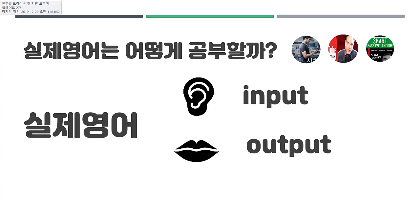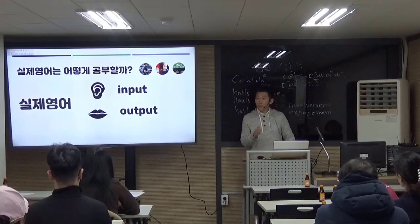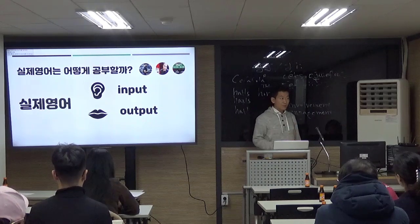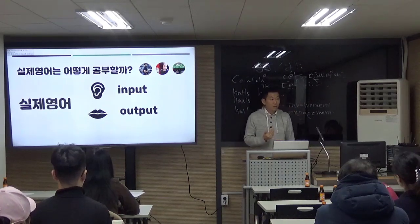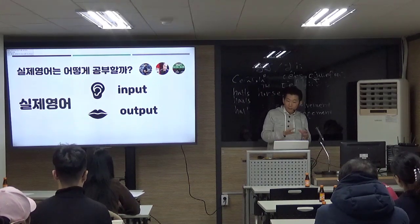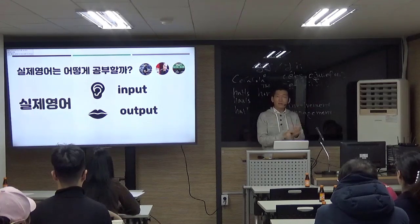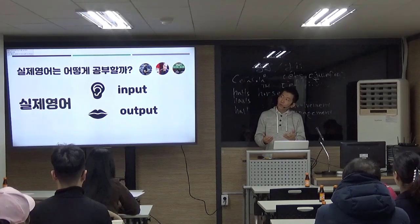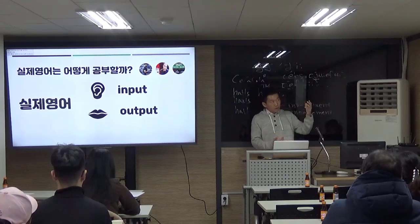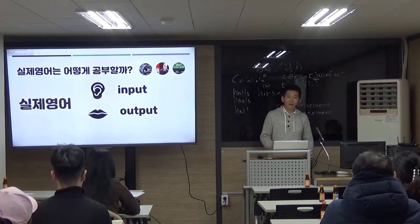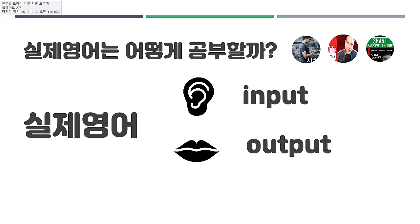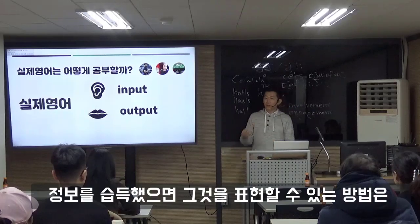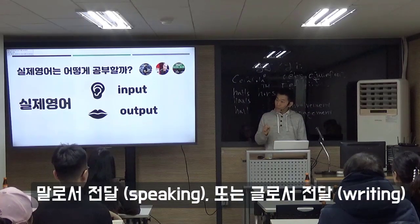인풋하면 어떤 것이 생각나요? 우리가 정보를 습득하는 방법 두 가지가 있죠. 일단 읽는 거죠. 글을 읽음으로써 정보를 습득합니다. 그 다음 두 번째는 듣는 거잖아요. 보고 듣고 하는 거죠. 정보가 쌓이면 그것을 전달해야 되겠죠. 전달할 수 있는 방법도 두 가지예요. 첫 번째는 말로서 전달하는 방법, 두 번째는 글로서 전달하는 방법이 있죠.